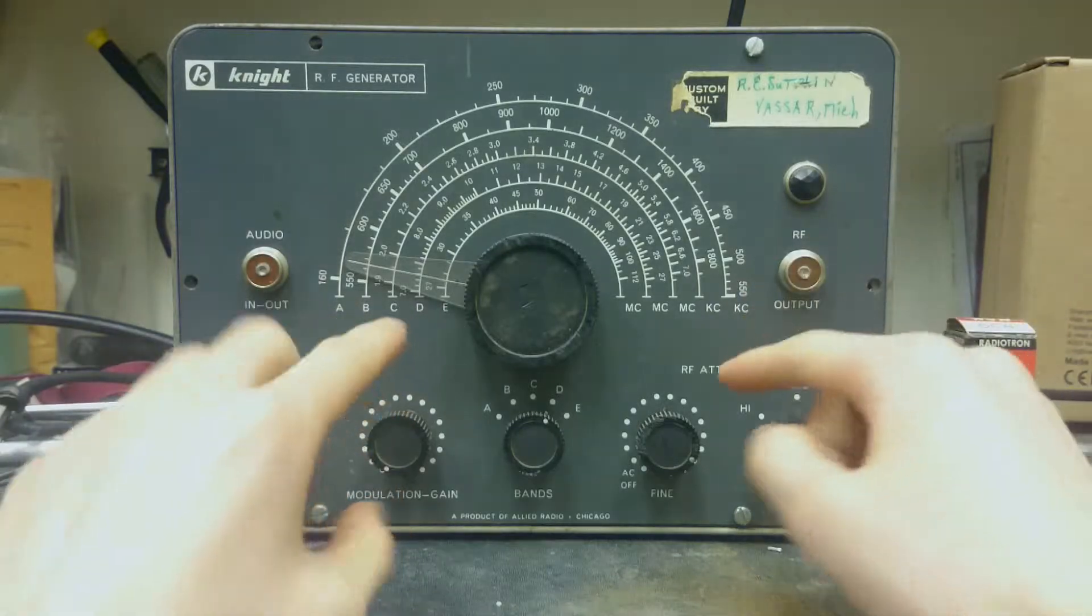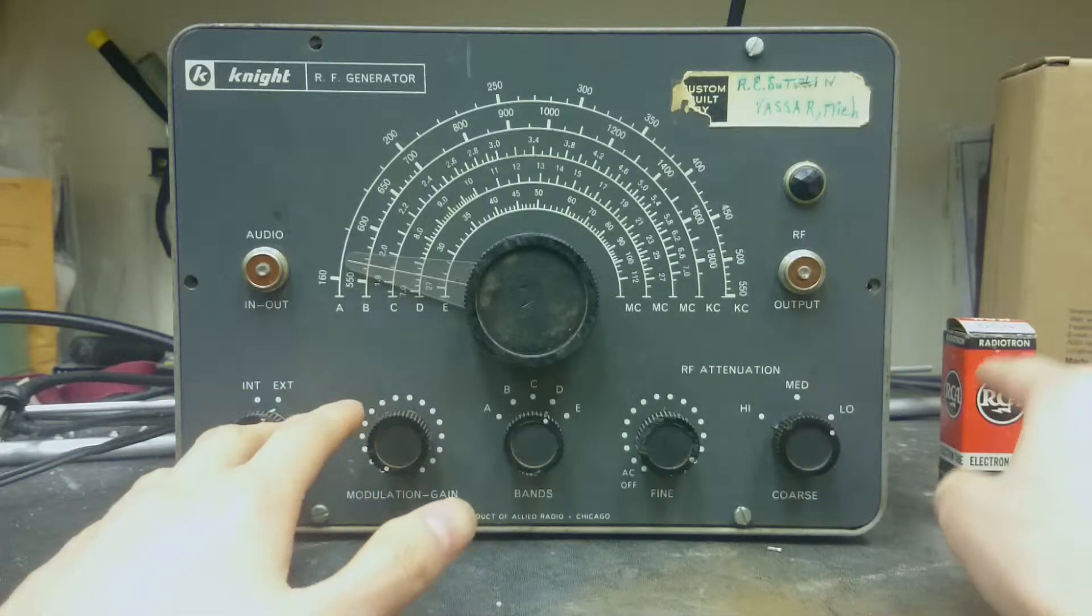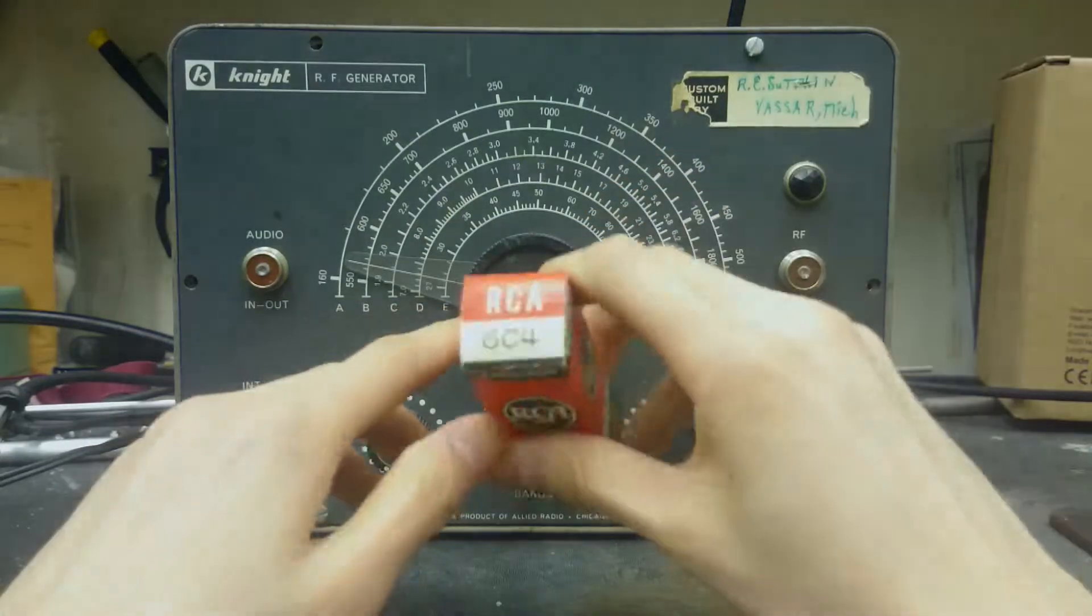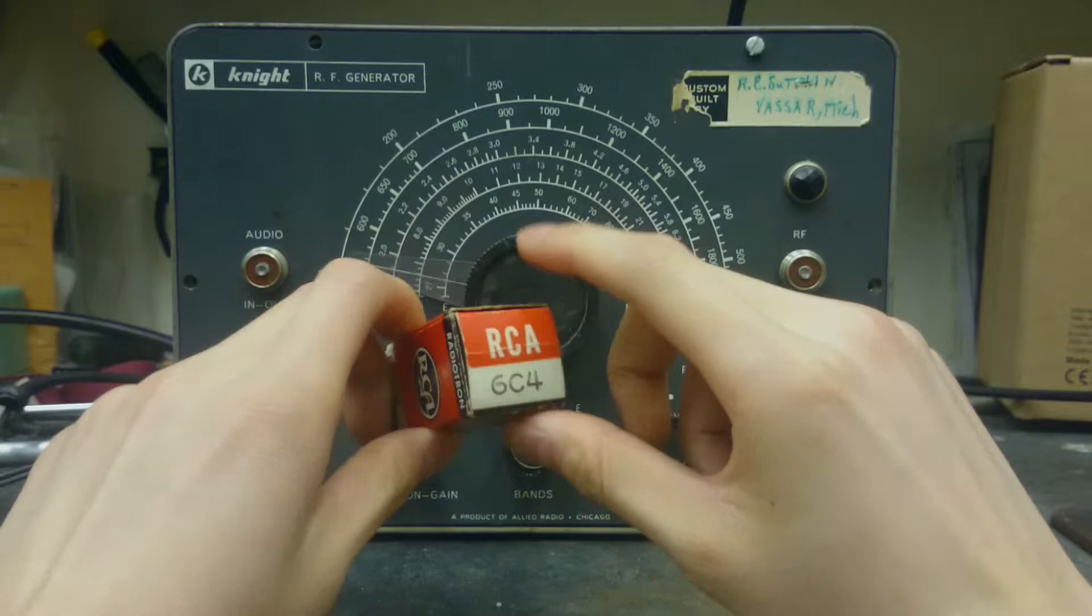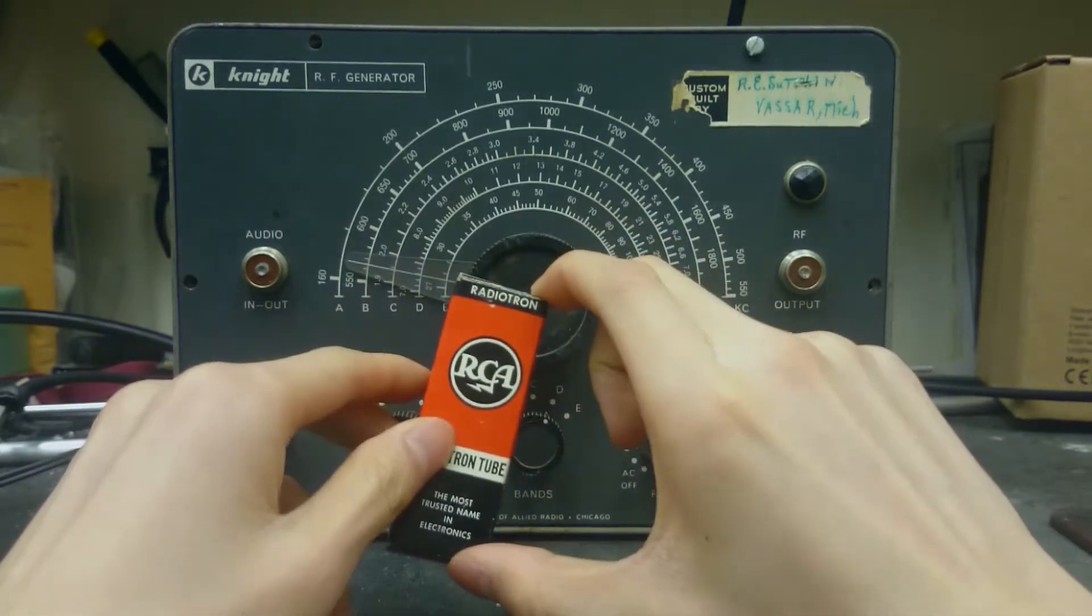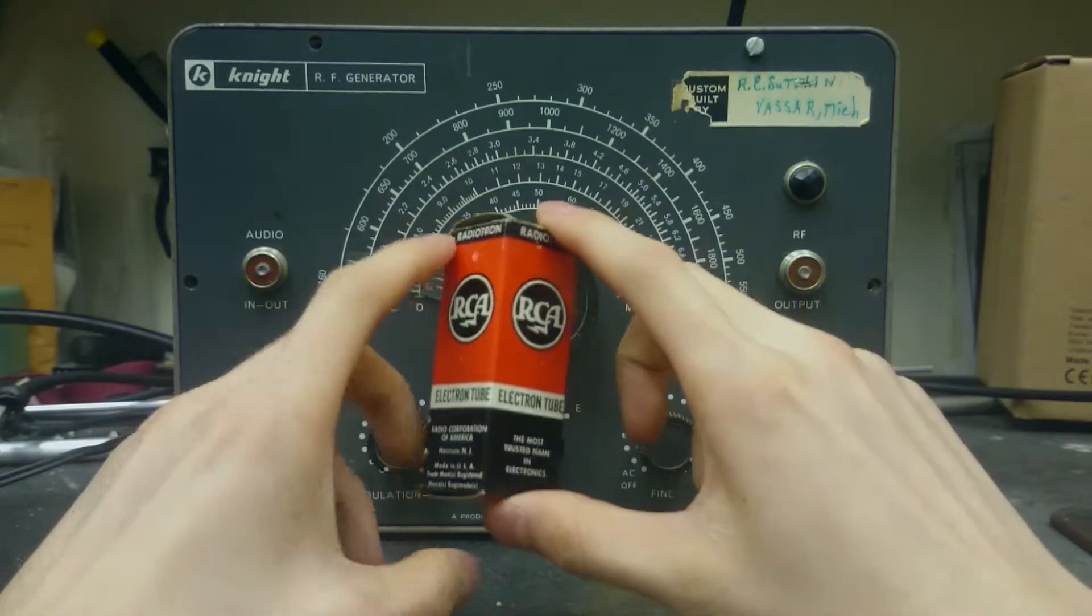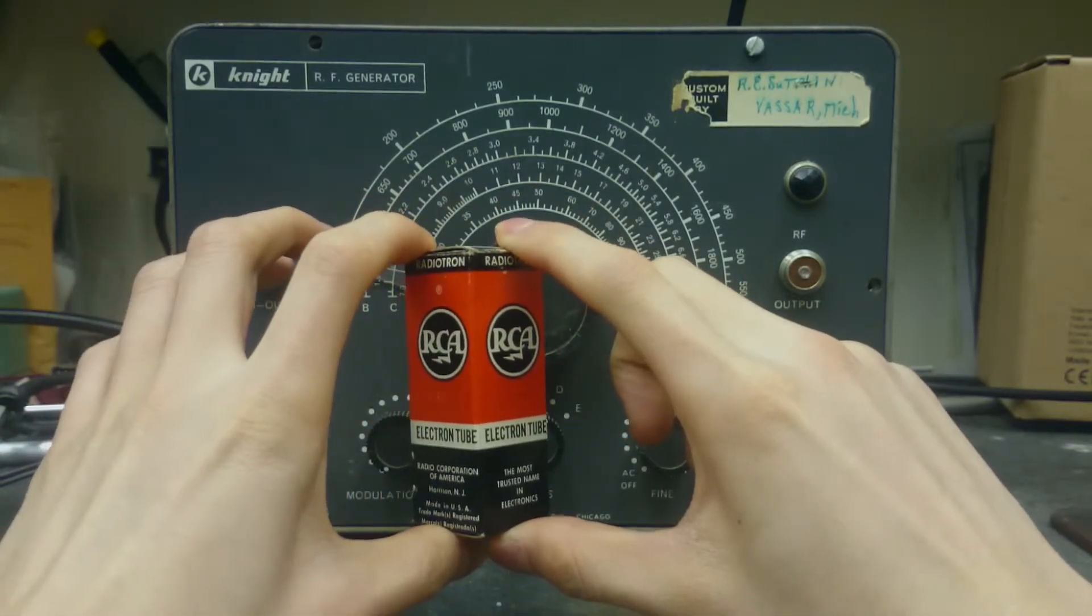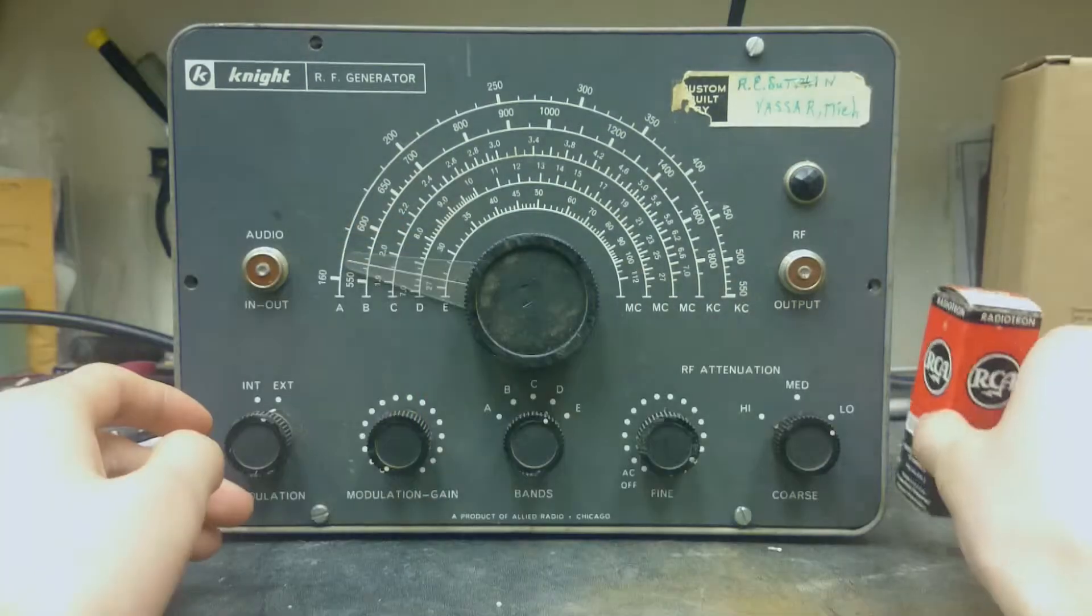The schematics showed that this uses two tubes. One of them I also got at the ham swap because I figured it probably won't work. One of them is a 6A4 triode and the other one's a 12AT7 which I was not able to find at the ham swap. This tube also cost me five dollars, so at this point I was down ten dollars.